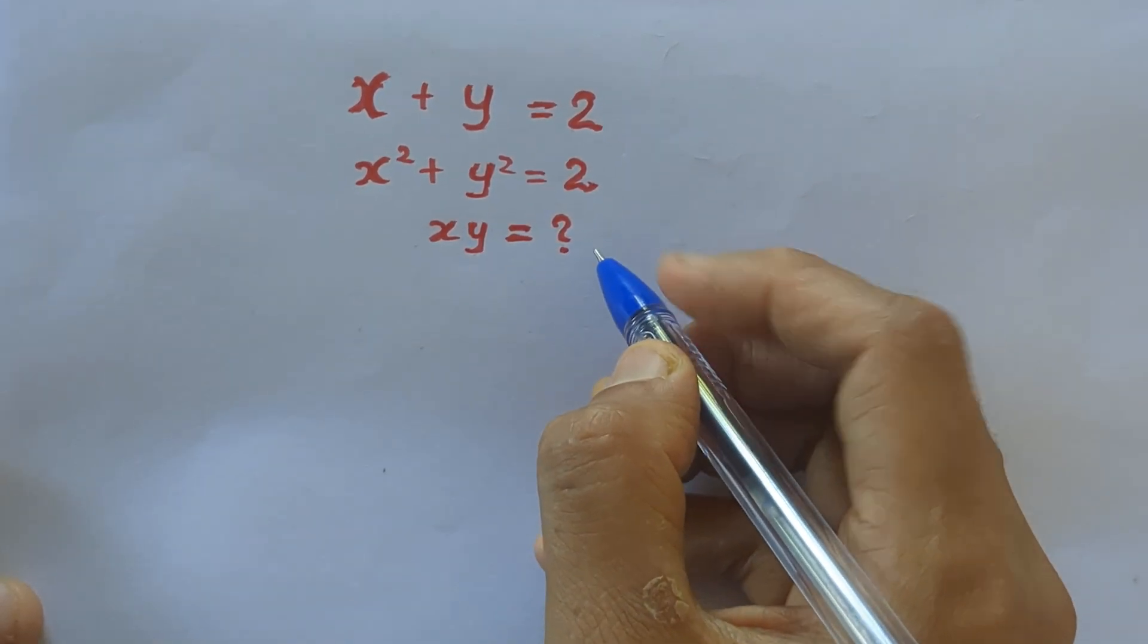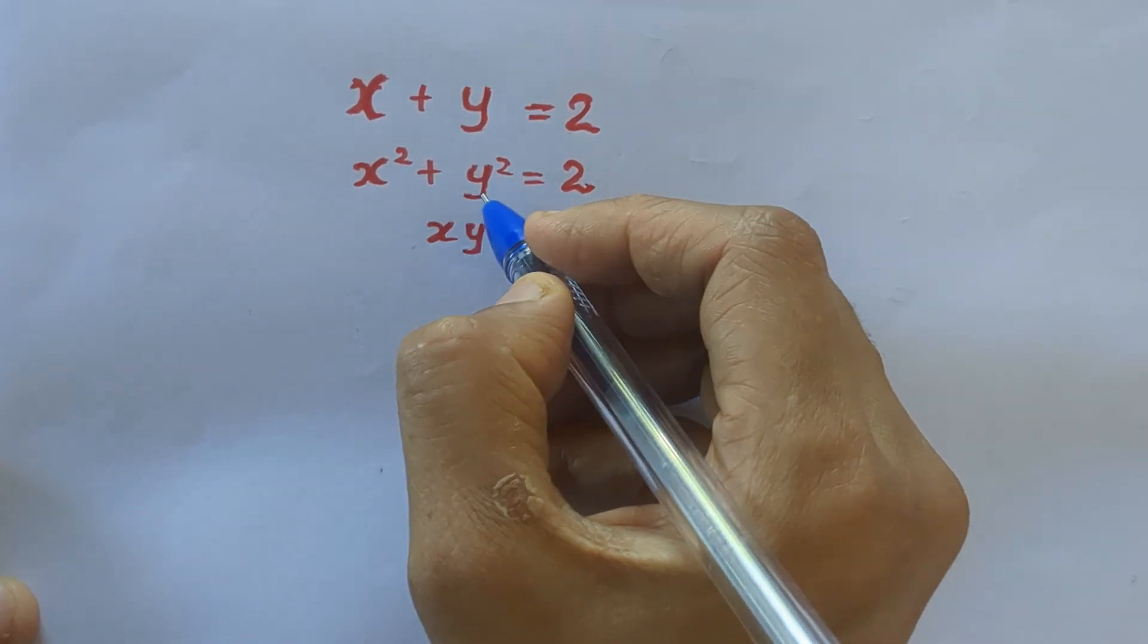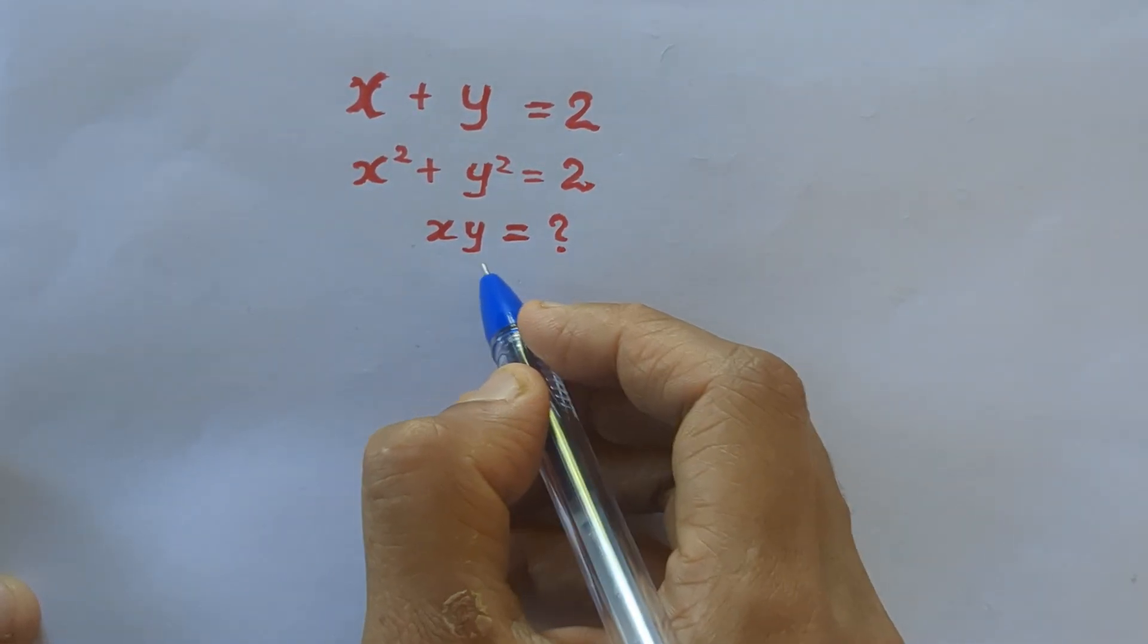Hello everyone. So our question is x plus y equal to 2, x square plus y square equal to 2, and we have to find out xy.